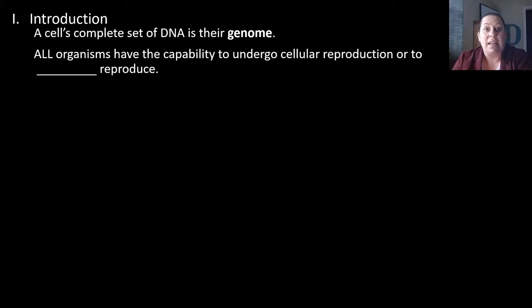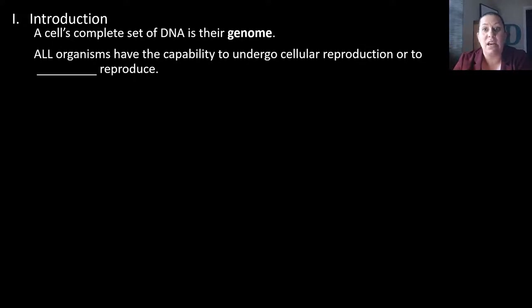A cell's complete set of DNA is what we would call their genome. All organisms, no matter what organism we're talking about, have the capability to undergo cellular reproduction. This cellular reproduction is known as asexual reproduction, where a cell can end up reproducing by itself.